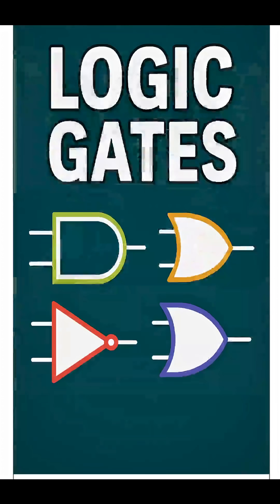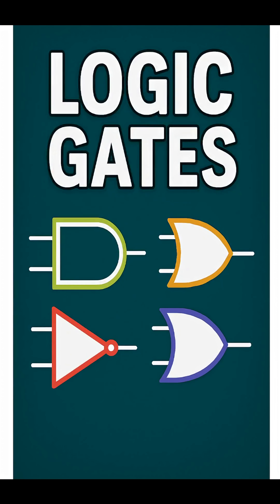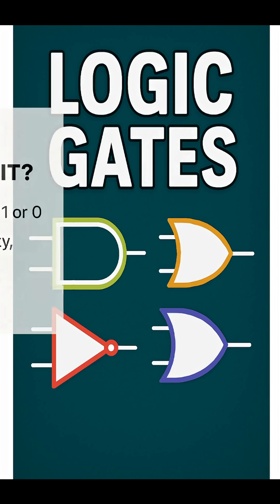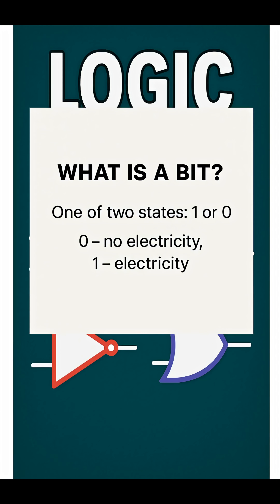This is an XOR gate. An XOR gate is a type of logic gate, which is something in a computer that inputs and outputs bits to regulate the flow of electricity. A bit is simply one of two states: zero, having no electricity, and one, having electricity.